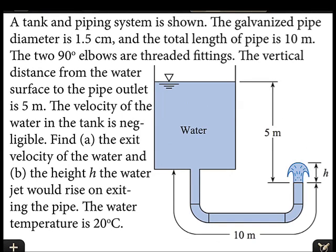Welcome. I'll begin by interpreting the problem statement. This problem involves a tank and piping system. The diameter of the pipe is 1.5 centimeters, and the total length of the pipe is 10 meters.